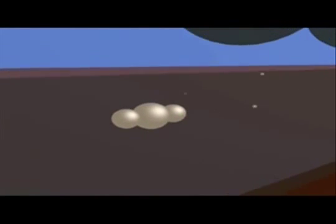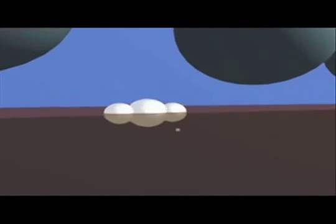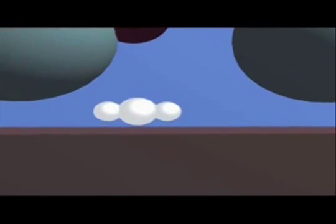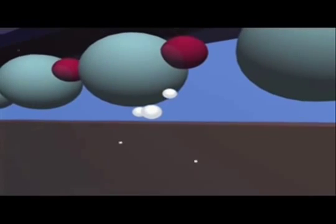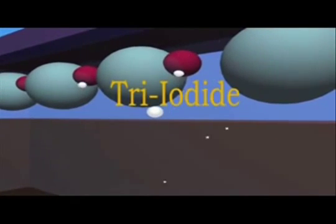The iodide ion makes its way towards the activated dye molecule and transfers an electron to the dye. The iodide ion reforms back to triiodide and the dye molecule reverts back to its previous unactivated state.